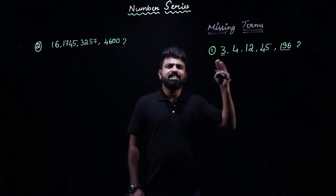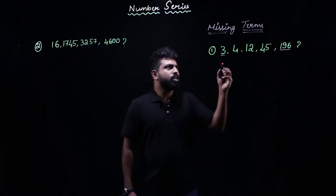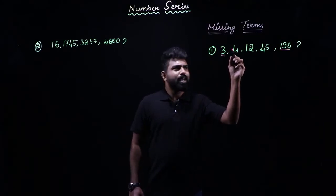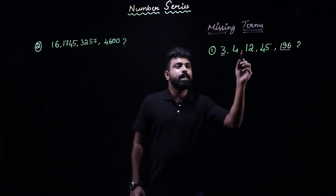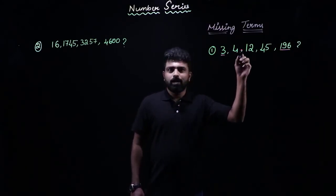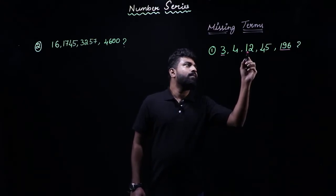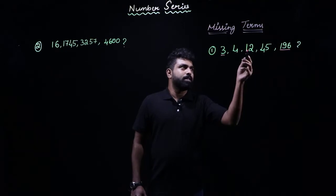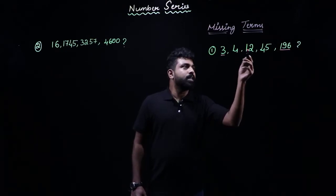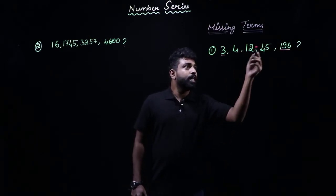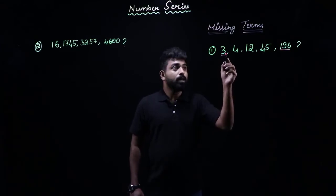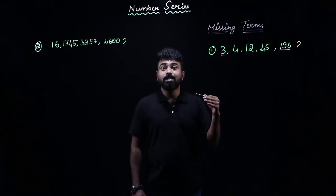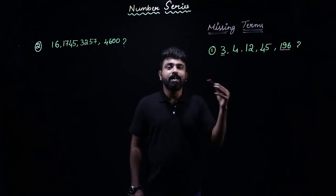Let us see if they are increasing gradually or drastically. From 3 to 4, there is an increment of 1; from 4 to 12, there is an increment of 8; from 12 to 45, the difference is 33. So it is not a step-by-step increment — it is a drastic or uneven increment.